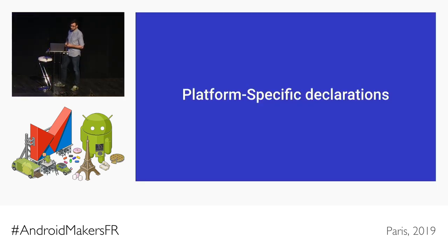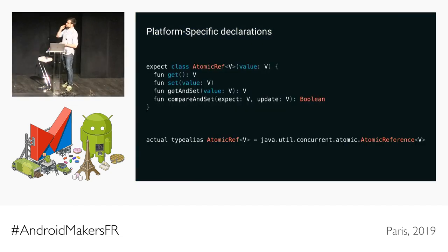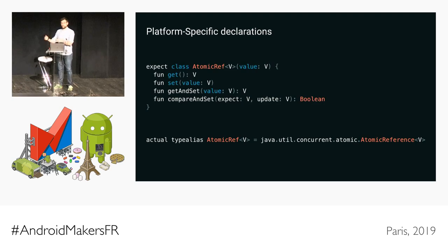There's something called platform-specific declarations. This means you can have a platform-specific library you want to use in your common code, but provide your own implementation for another platform. It allows you to provide a type alias. Say in your common code you have an AtomicReference class defined. If you're targeting JVM, you declare a type alias actually using the Java concurrent AtomicReference class. You can also create a class that lives in common code but whose actual implementation uses a specific library targeted only for JVM, and then provide a different implementation for another platform.